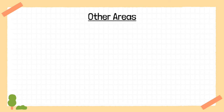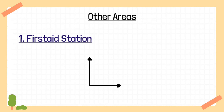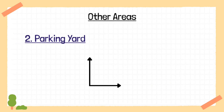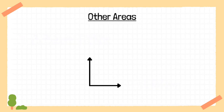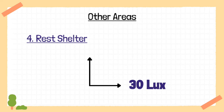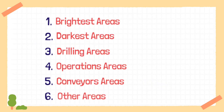Finally, in other areas: the first aid station should have 50 lux in horizontal direction. The parking yard should have 50 lux in horizontal direction. The pumping station should have 40 lux in horizontal direction. The rest shelter should have 30 lux in horizontal direction. Other general areas specified by the manager should have 10 lux in horizontal direction.